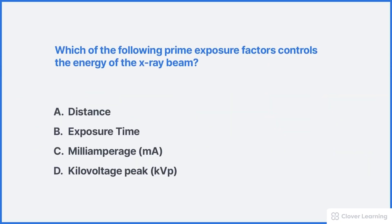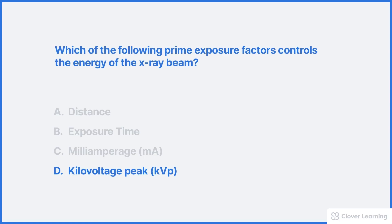Let's try a practice question. Which of the following prime exposure factors controls the energy of the x-ray beam? The correct answer is D, the KVP. Kilovoltage peak, or KVP, controls the energy of the x-ray beam. Distance, time, and MA all influence the beam quantity or intensity, but they play no role in controlling the beam energy or quality. When KVP increases, the beam energy also increases.